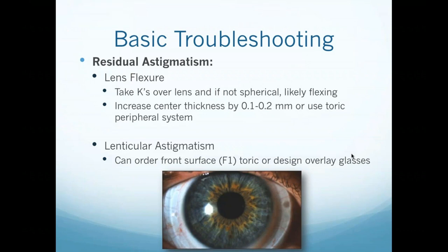A second common cause of residual astigmatism is lenticular astigmatism, as both the cornea and crystalline lens contribute to refractive error. Changing thickness or periphery won't fix this. Instead, many companies now offer a front surface toric, with toric markings as drill dots on either side of the lens. This is rotationally dependent, like a soft toric — if it rotates, it affects vision. If it does rotate, you can redo the spherocylindrical over-refraction and have the lab reincorporate the axis. Alternatively, overlay glasses with the cylinder incorporated can be designed, which is particularly useful for presbyopic patients needing an add.